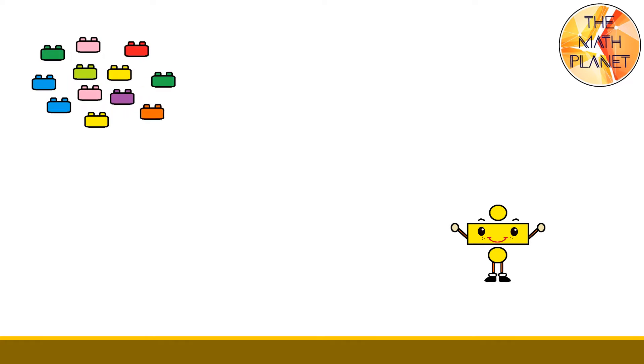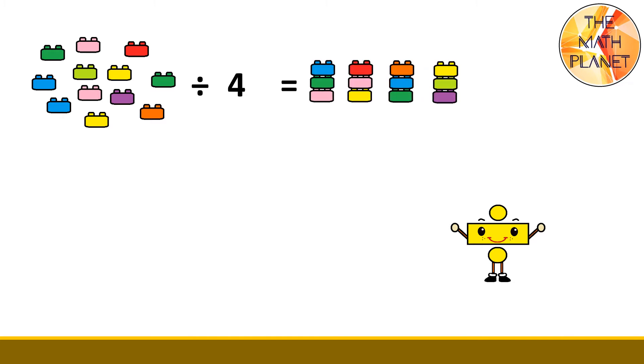Division means splitting into equal shares or groups. For example, if we have 12 blocks and we need to divide them into four equal groups, we will end up with three blocks in each of the four groups.